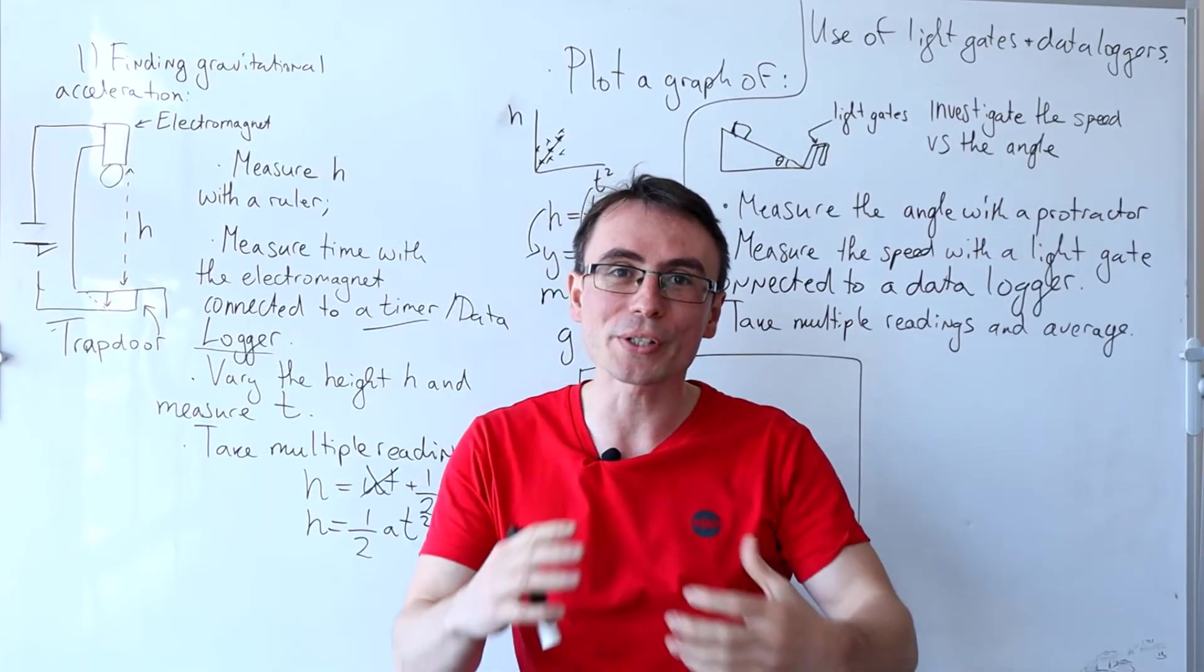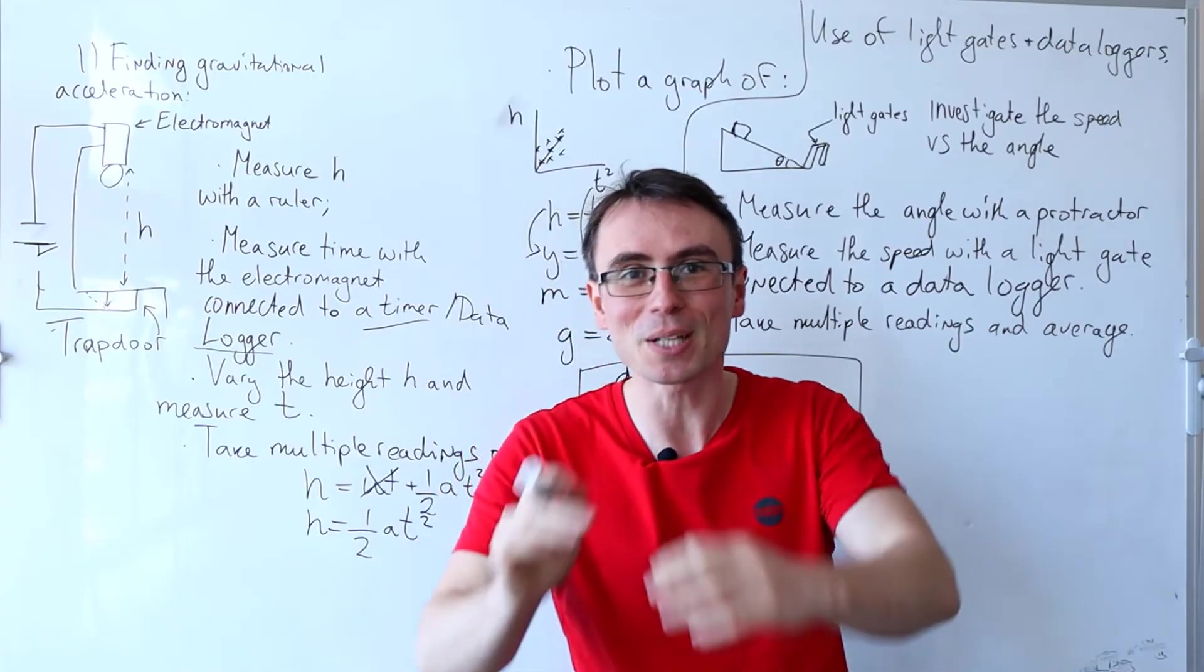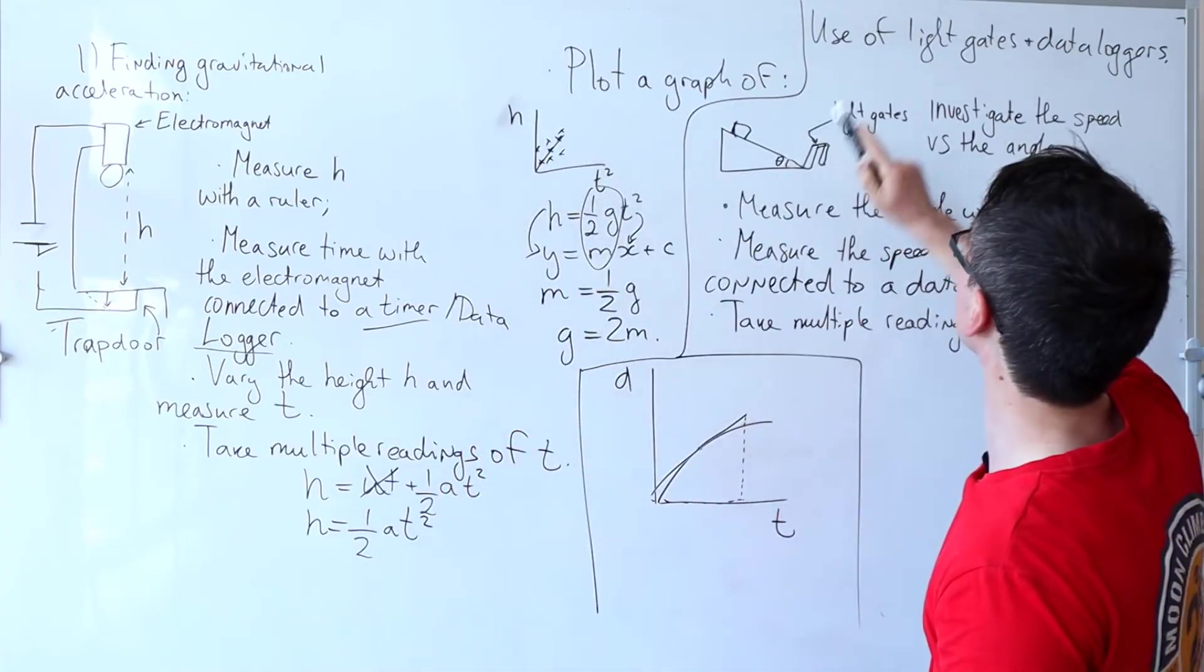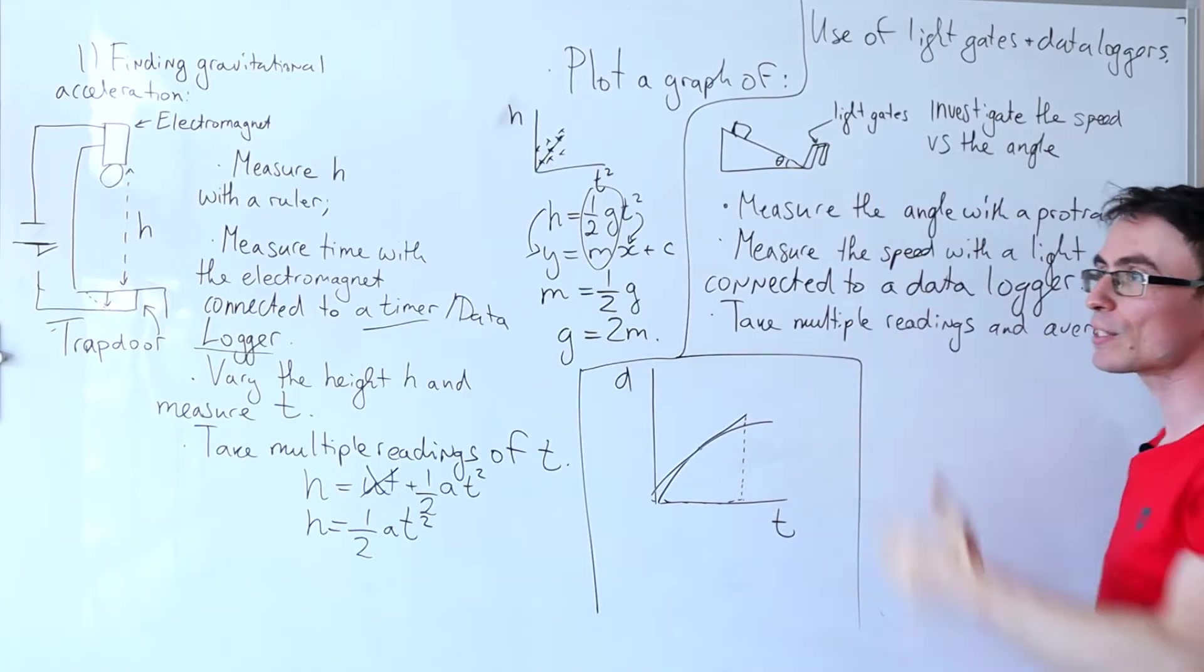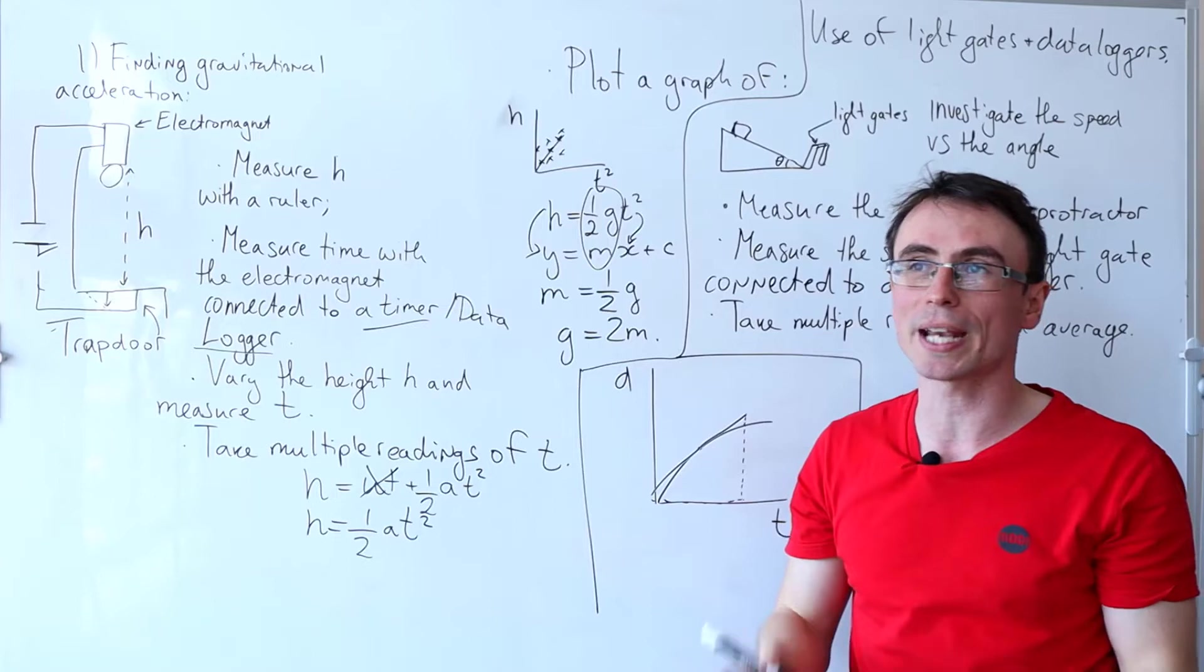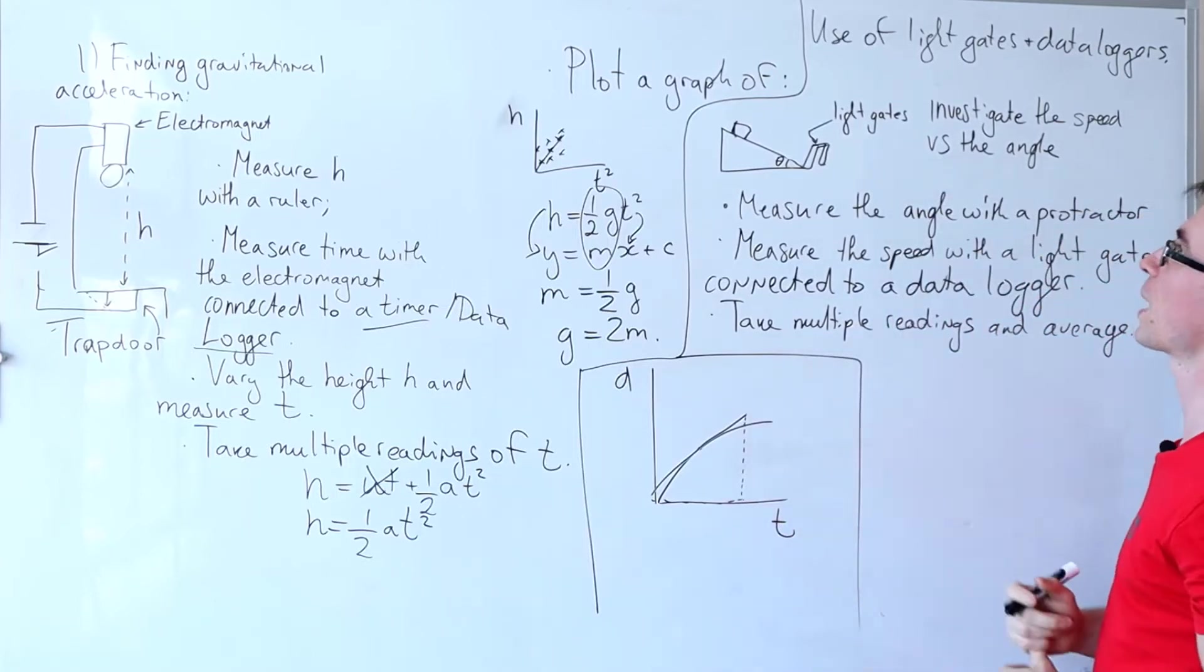Now one, two in our arsenal of six markers measuring instruments is the use of light gates plus data loggers. We can use light gates to measure speed very accurately, also time if it need be.